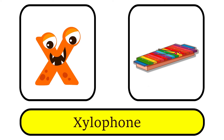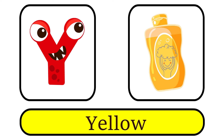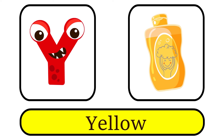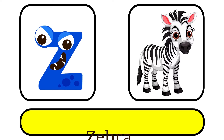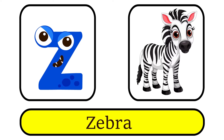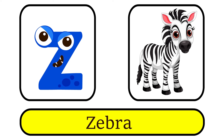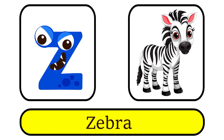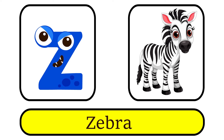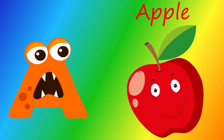X is for Xylophone. X, X. Y is for Yellow. Y, Y. Z is for Zebra. Z, Z. Zebra.